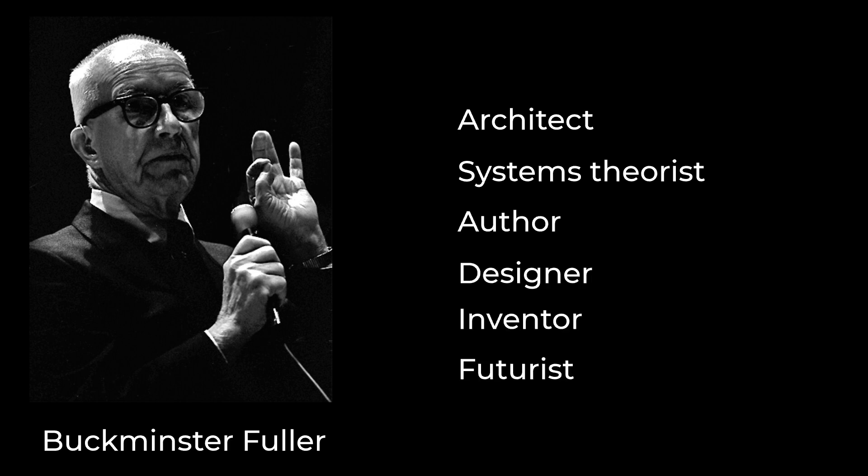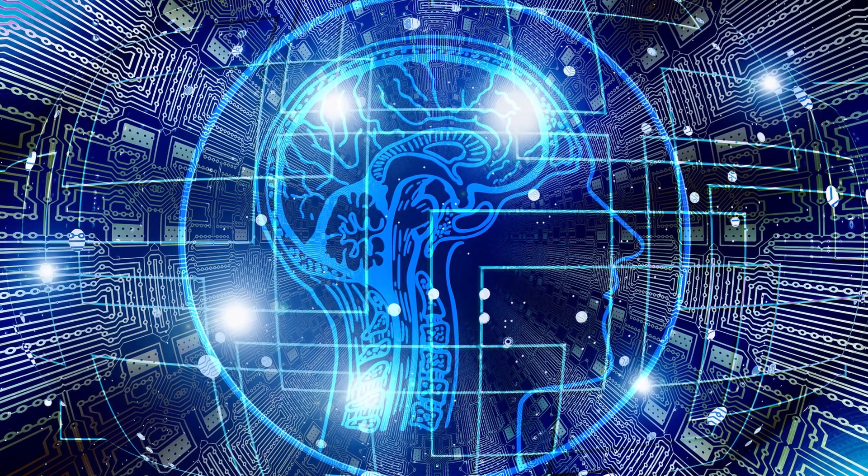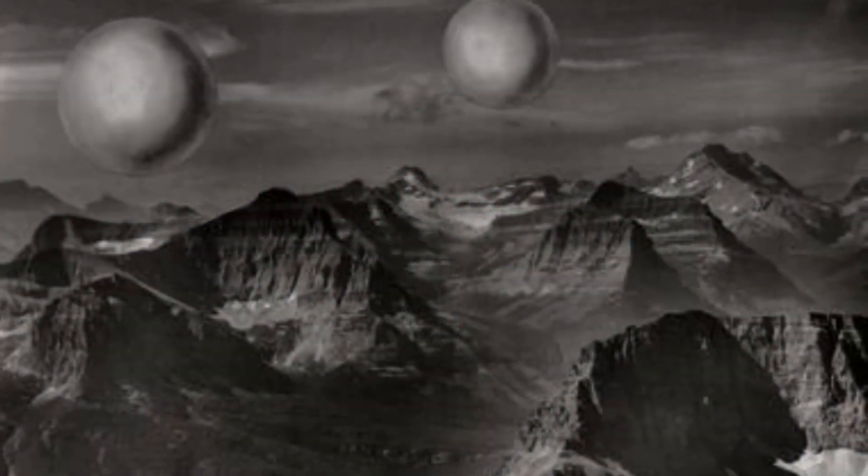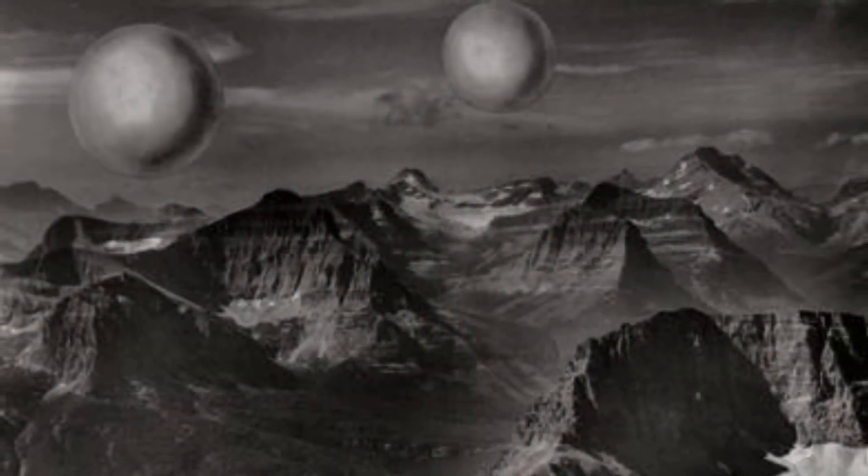Buckminster Fuller was an American architect, systems theorist, author, designer, inventor, and futurist. Wow, that's what I call a multilateral person. He wanted to build floating habitats with the help of giant geodesic spheres.